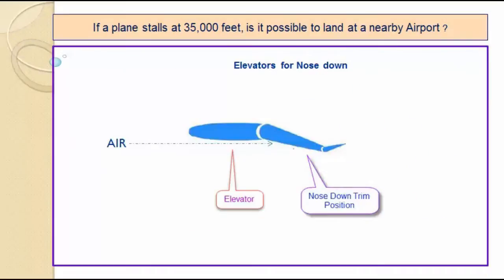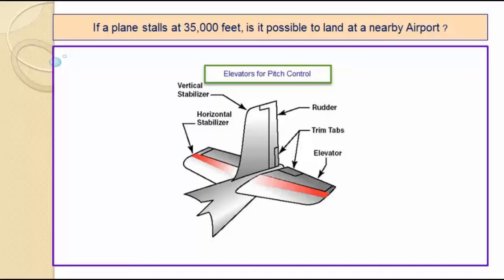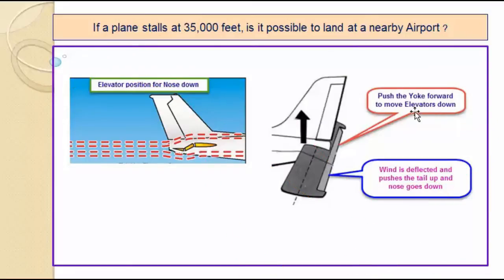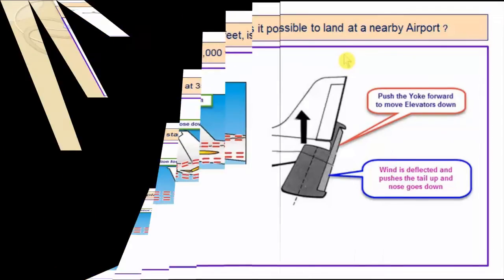Elevators are used for pointing the nose down — this is the nose-down trim position of the elevator. By pushing the elevators to a down position, the downward force of the tail is decreased. Push the yoke forward to move the elevators to the down position. The air passing gets deflected, creating a force that lifts the tail up and pitches the nose down.